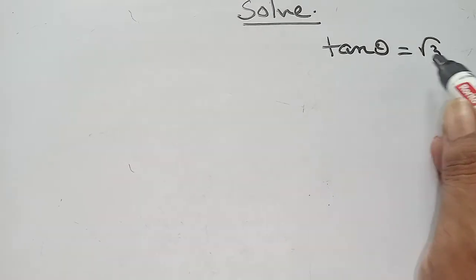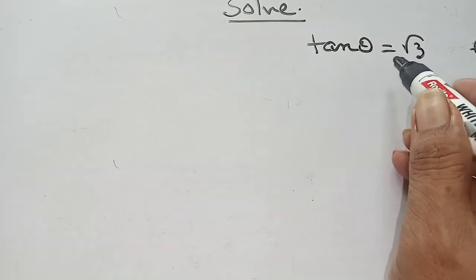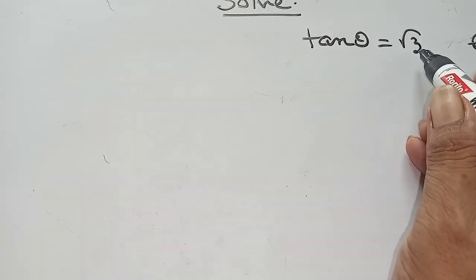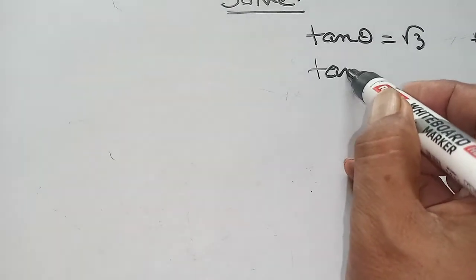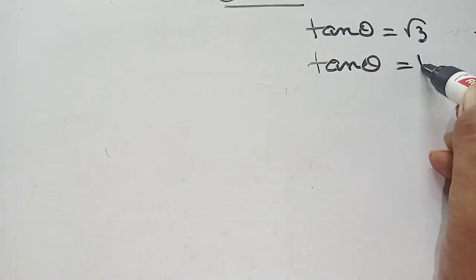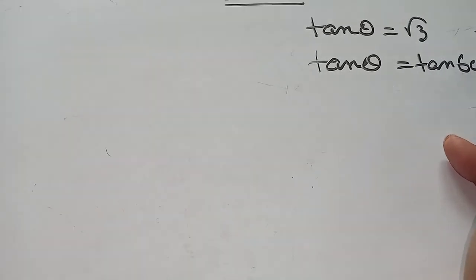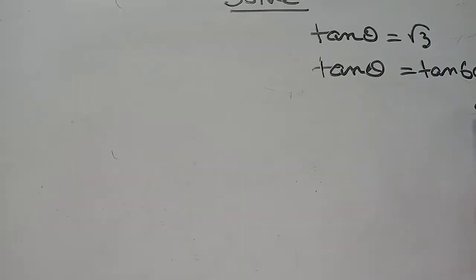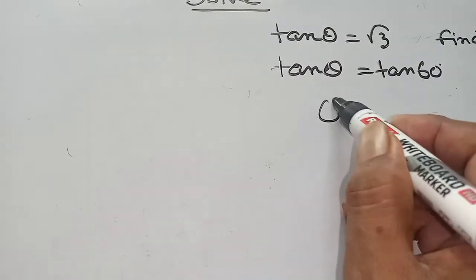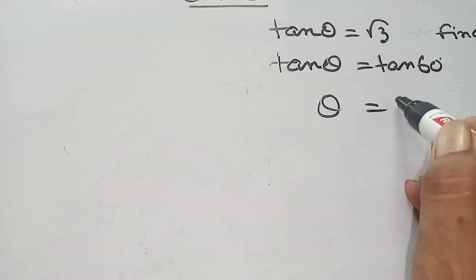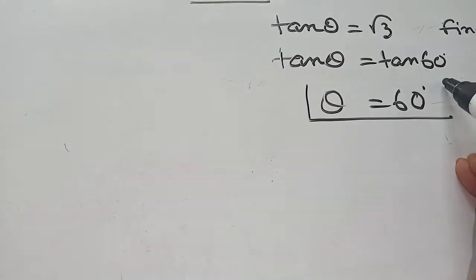That means here is given Tan Theta equal to Root 3. In which value of Tan is Root 3? Then Tan Theta equal to Tan 60 degree. Tan 60 degree value is Root 3. Then Tan and Tan cancel. That means Theta equal to 60 degree. This is the answer.